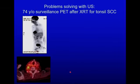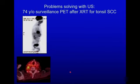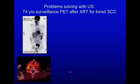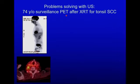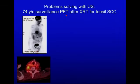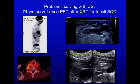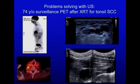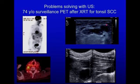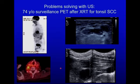Another use of ultrasound is problem solving. A patient treated with chemo and radiation for tonsil squamous cell carcinoma had a PET-CT with areas of activity following the digastric and scalene muscles, suggesting asymmetric muscular activity. We did ultrasound to carefully examine these muscles and found asymmetry of the digastric muscles probably related to therapy, but no mass, and therefore no biopsy was performed. The patient has been fine on further surveillance.